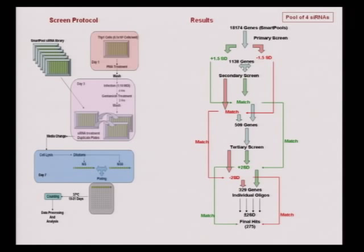We did a three-layered primary screen where we first screened all targets using a relatively low threshold cutoff. We got around 1,100 targets that gave significant effects. We repeated these and picked up only those that gave identical reproducible results, then repeated in a tertiary screen with a higher cutoff, getting about 329 primary hits.